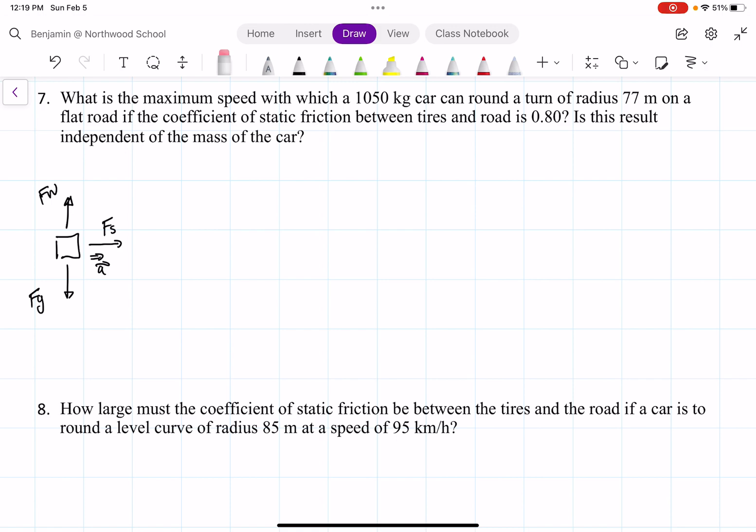Then if we write down the known values, we have the mass is 1050 kilograms, r is 77 meters, and mu s is 0.8.